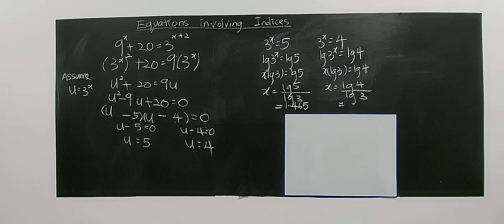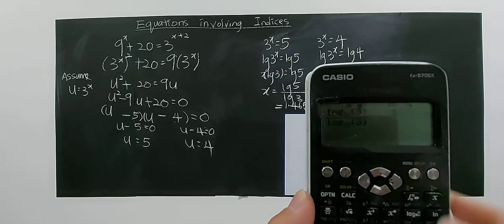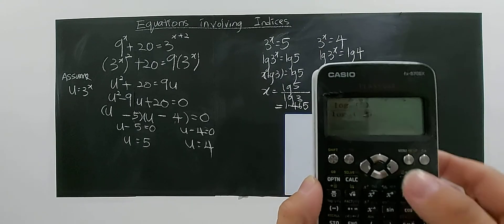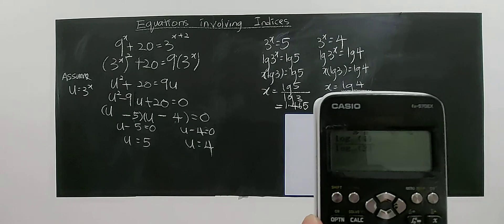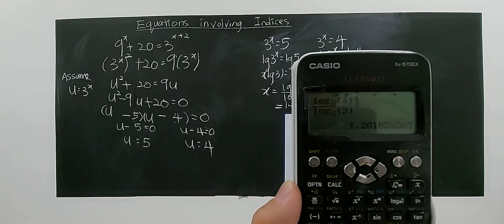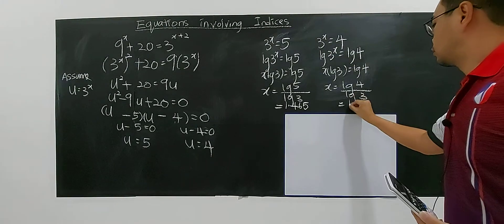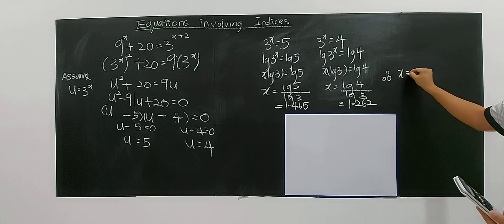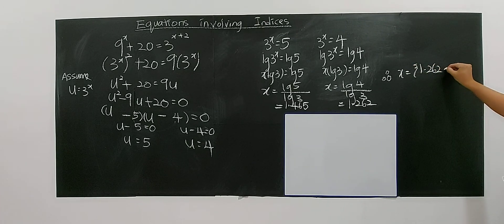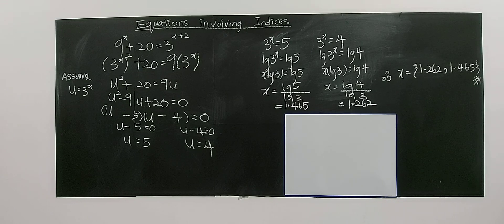So another one — just modify from here, change the 5 to 4, press equal, and you get 1.262. Therefore your answers are x = 1.262 and x = 1.465. That's how you solve this type of equation involving indices.